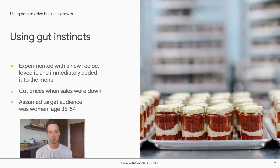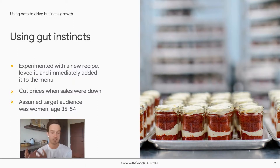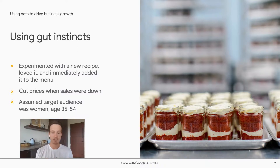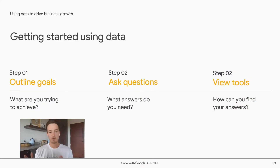Tracy and Danny made some decisions based on gut instinct — and that can work — but it's usually better to base business decisions on data. The bottom line is that business decisions are less risky when backed by data. Some of their gut-instinct decisions included experimenting with a new recipe and immediately adding it to the menu, cutting prices when sales were down, and assuming their target audience was women aged 35 to 54. To make the process simple, we've developed a three-step plan: outline your business goals, ask the questions you need answered to hit those goals, and use the right tools to answer those questions.